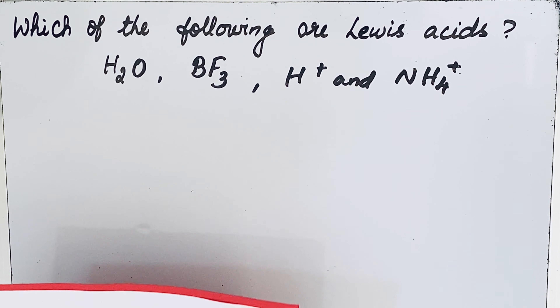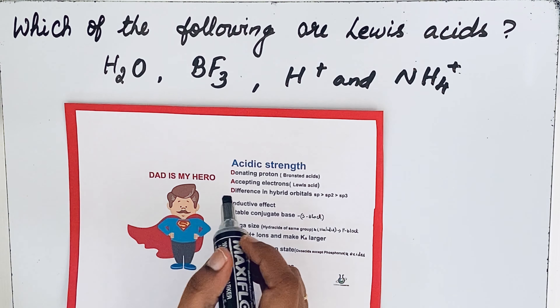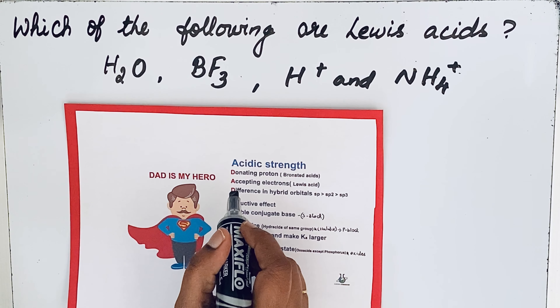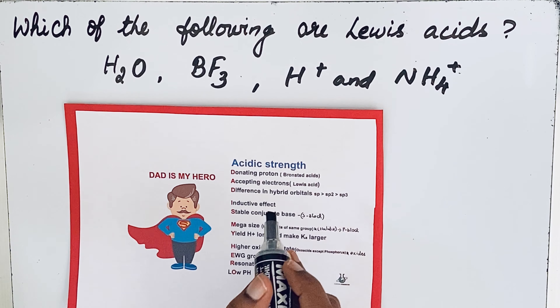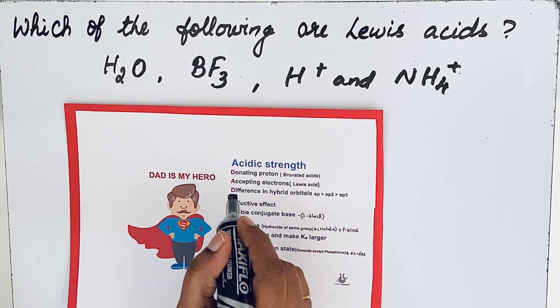We can solve this question very easily by using a simple mnemonic: 'DAD IS MY HERO.' Each letter in this mnemonic represents the reason responsible for acidic strength. For example, 'D' stands for donating proton — Brønsted acid; 'A' stands for accepting electrons — Lewis acid. So here itself we get the answer.